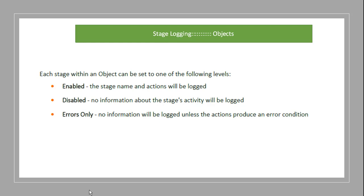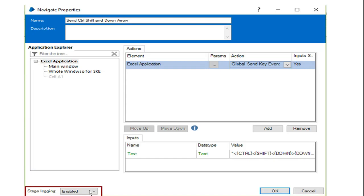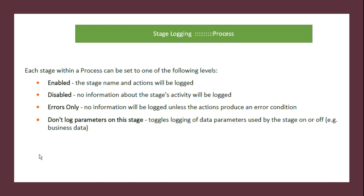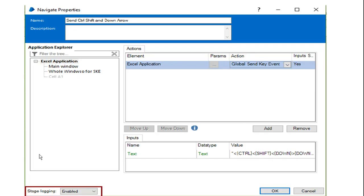If set to 'disabled,' no information about the stage's activity will be logged. If set to 'errors only,' no information will be logged unless the action produces an error condition — for example, any type of system error or exception error would be logged in the errors only stage. Stage logging is enabled by default in the development phase.